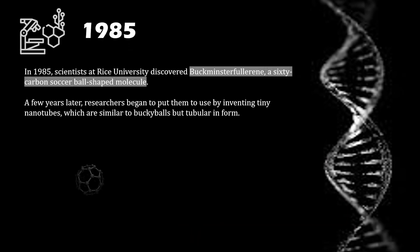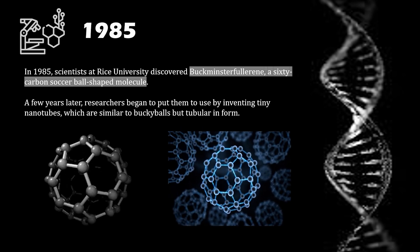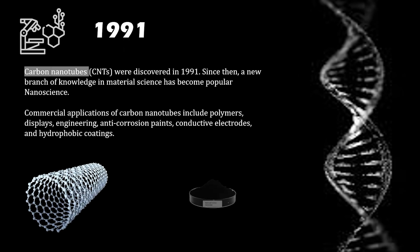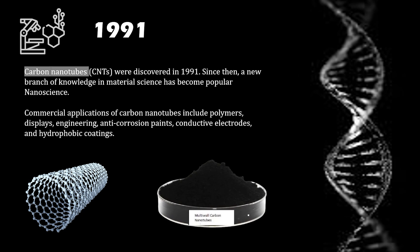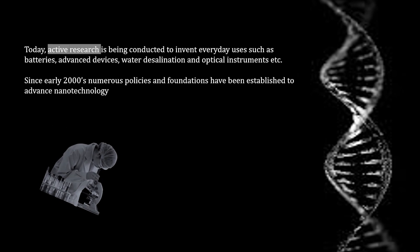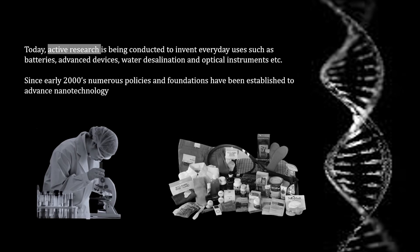In 1985, scientists discovered Buckminster fullerene — a 60-carbon, soccer-ball-shaped molecule. A few years later, researchers began to put them to use by inventing tiny nanotubes. Carbon nanotubes were discovered in 1991 and are used for many commercial applications. Today, active research is being conducted to develop everyday uses such as batteries, advanced devices, water desalination, and optical instruments using carbon nanotubes.